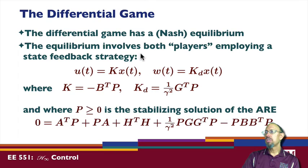And the equilibrium involves both players employing a feedback strategy. u is equal to k times x. w is equal to kd times x. kd we've already seen given by this expression. k we've already seen given by this expression. They're both going to try employing feedback strategies.